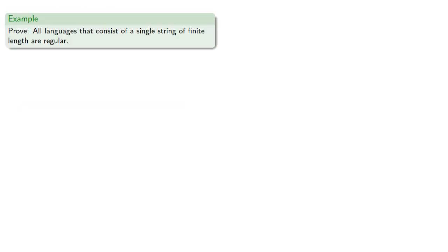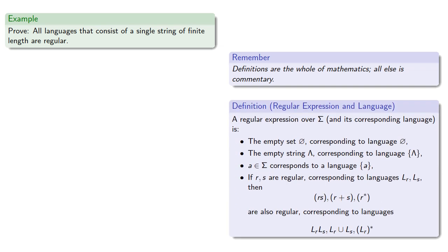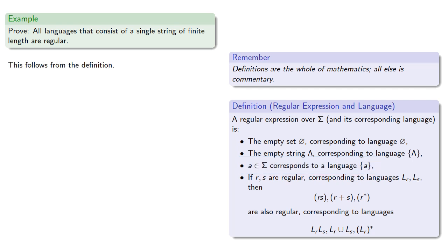Let's prove that all languages that consist of a single string of finite length are regular. Definitions are the whole of mathematics — all else is commentary. We pull in our definition and we see that, yes, all languages that consist of a single string are regular, and so this statement follows from the definition. Or does it?